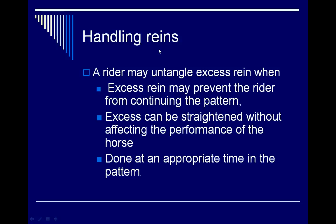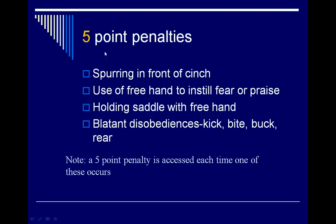Regarding rein handling: riders can untangle excess rein because sometimes when a horse spins, stops, or does something fast, the tail of the reins might end up on the incorrect side. They can straighten the excess rein when it prevents continuing the pattern, without affecting the horse's performance, but generally the horse must be stopped before correcting rein issues.